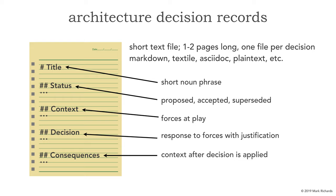Two additional sections I usually add: one is metadata — who's the author, when was it approved, who approved it, and if it was modified, when and by whom. The second one I've been recently adding quite a bit is measurements for compliance. When I make an architecture decision, I document how I'm actually going to measure it using some sort of automated or manual fitness function. Let's take a look at an ADR.